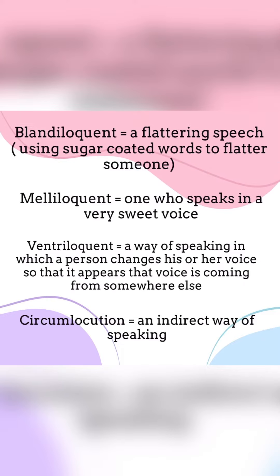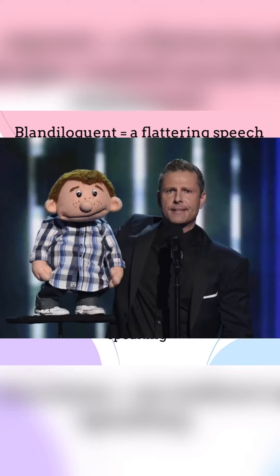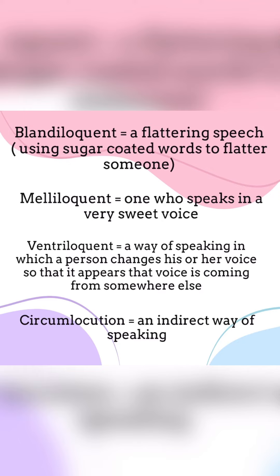7. Ventriloquent — that means a way of speaking in which a person changes his or her voice so that it appears the voice is coming from somewhere else. 8. Circumlocution — that means an indirect way of speaking.